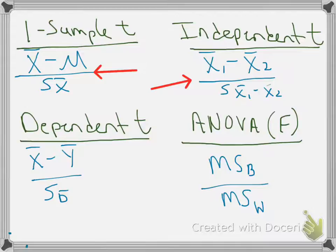The same thing repeats itself with the dependent samples t-test. In this case, the top is the difference between observed sample means. The bottom is the expected difference due to random sampling — the standard error of the difference between the means. So again, exact same idea.